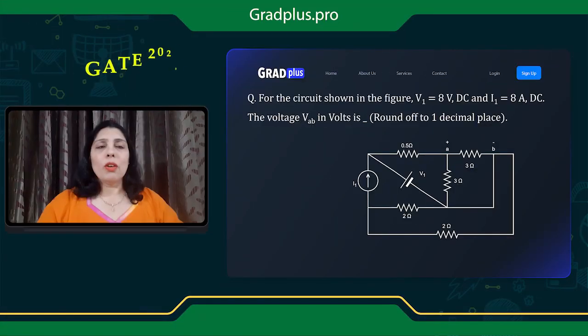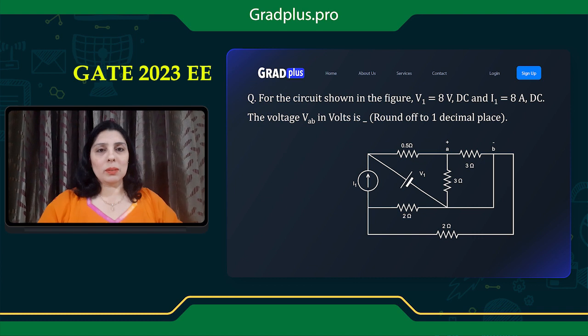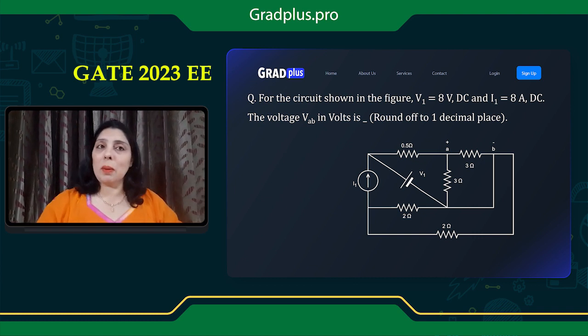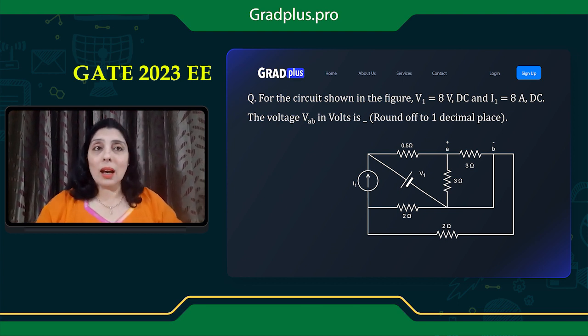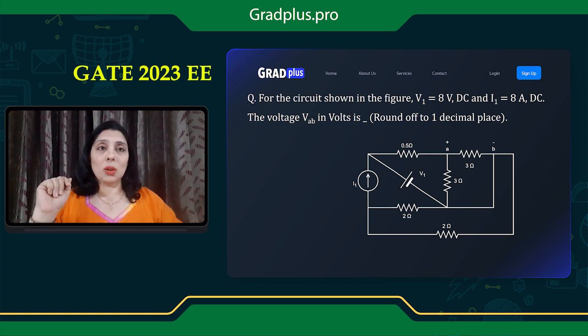If you try to maintain this flow of your topics, I'm sure you will enjoy your subject like your favorite web series. Now let me give you a glimpse of the previous year GATE questions. For example, just see this question — here we are asked to calculate the voltage across the terminals A and B. We can apply star-delta transformation and source transformation to simplify this circuit.